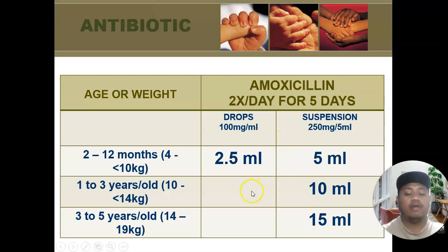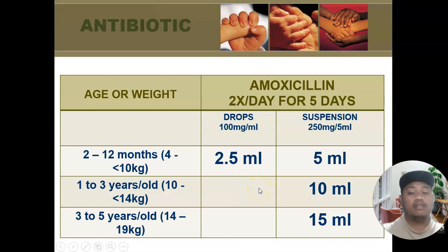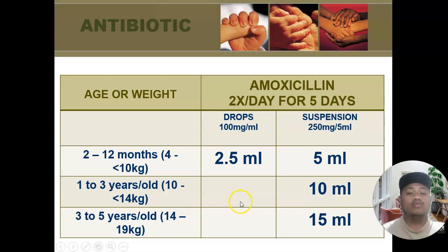Advise parents on how to take the oral medications and explain why it is given — they need to know what the medicine is for, how to give it, and what alternative measurements they can use at home. Explain that finishing the full course of amoxicillin, or any antibiotic, is very important to prevent drug resistance.